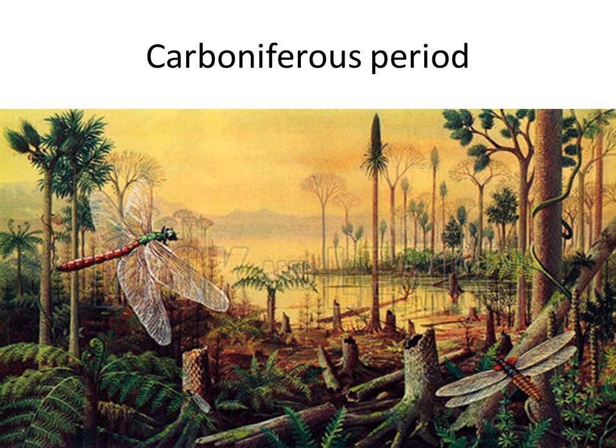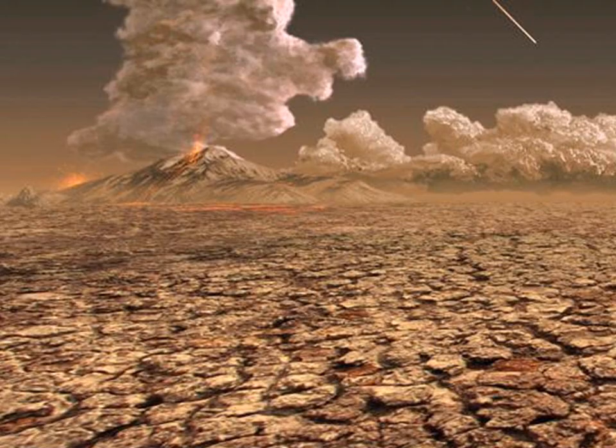Then at a certain moment the climate changed and the Earth became really dry. A lot of life forms died, and this was a period of mass extinction — meaning a lot of species died out and went extinct, never to return on Earth again.